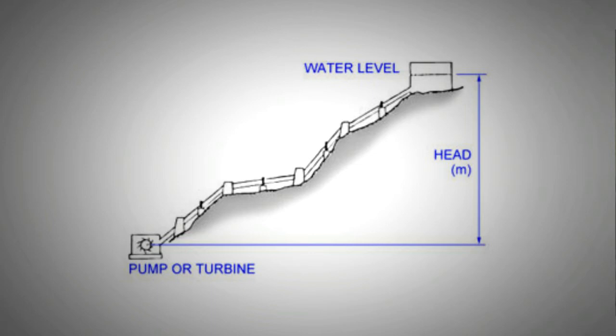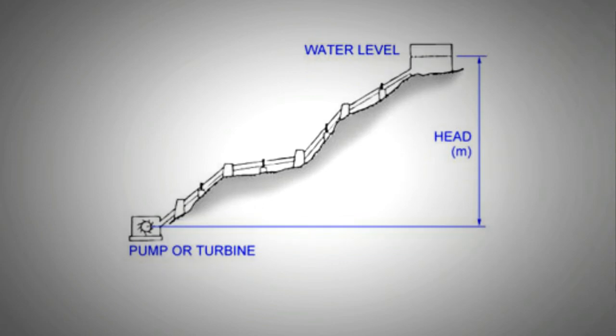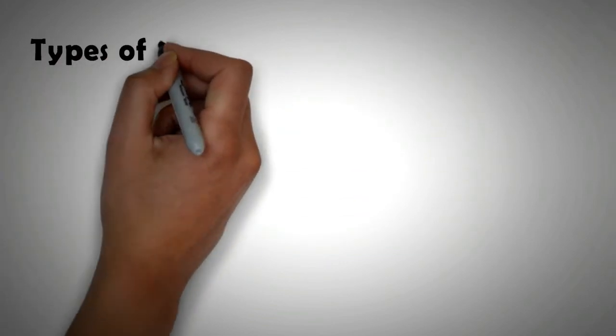And then there is also the flow rate. The flow rate is the volume of water crossing a certain point in a second. Based on the head of water and the flow rate at a certain location, the turbine type is selected.